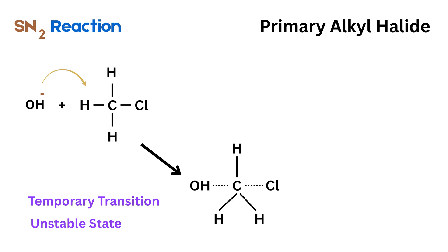Then the halogen completely leaves and the nucleophile takes its place. The result is a molecule in which the configuration of the carbon center is completely inverted, like flipping an umbrella inside out. This is known as inversion of configuration or the Walden inversion.